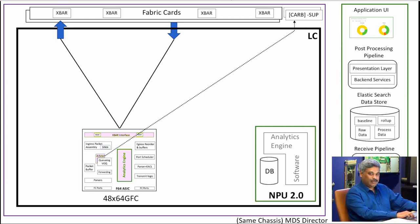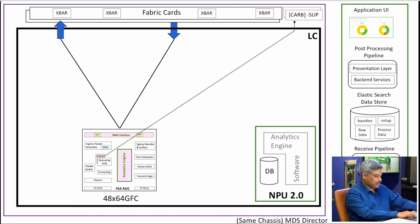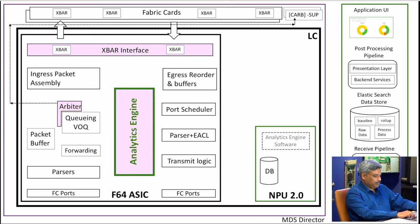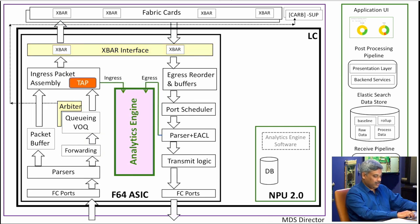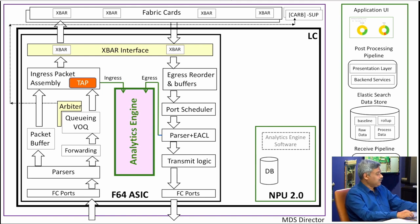In the 64 Gig ASIC, we took a major step forward on analytics. We support full line-rate analytics on every single port, irrespective of packet sizes. Each and every packet that comes in can be analyzed without a single drop — there is no sampling involved. You have full visibility and will not miss anything. The packet walkthrough is similar to 32 Gig, but the main difference is the database has moved on-chip.